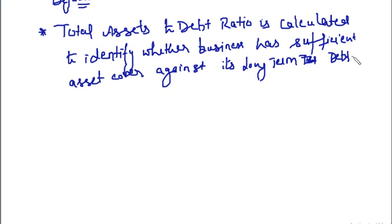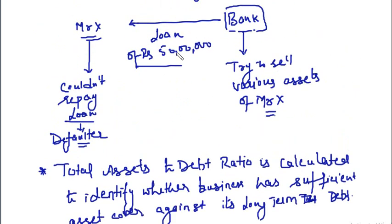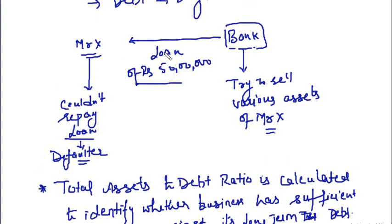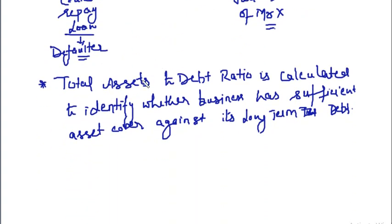If Mr. X has assets of say 60 lakhs, the bank will sell the assets and recover 50 lakhs plus interest — so the bank is absolutely safe. But if Mr. X has assets of say 30 lakhs, the bank is at a loss of 20 lakhs. That is why it is important to identify the total assets to debt ratio — whether the business has sufficient asset cover for its long-term debts.